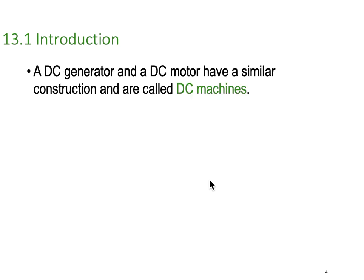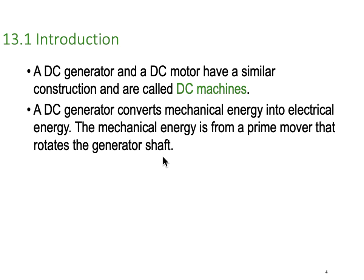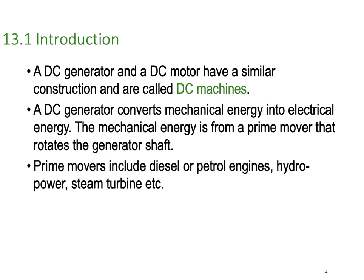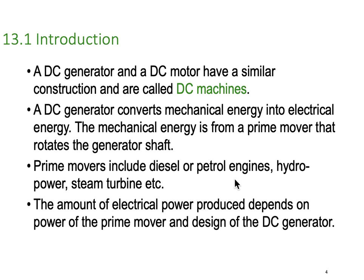A DC generator and a DC motor have similar construction and are both called DC machines. Sometimes they're even interchangeable — you can operate a DC motor as a DC generator and vice versa. A DC generator simply converts mechanical energy into electrical energy, where the mechanical energy comes from a prime mover that rotates the generator shaft. Prime movers include diesel or petrol engines, hydro systems, steam turbines, or gas turbines. The amount of electrical power produced depends on the prime mover and the design of the generator.